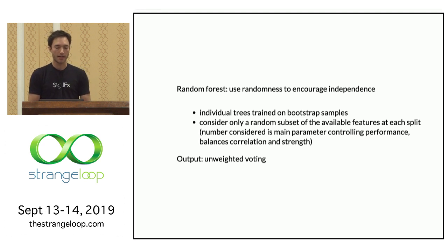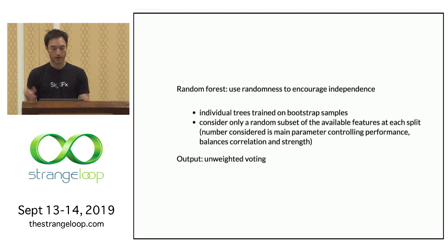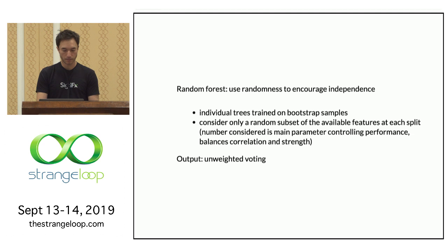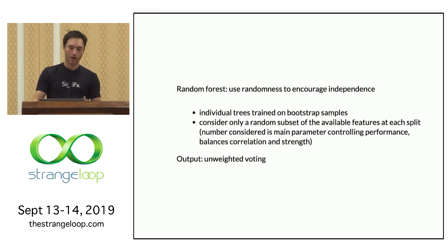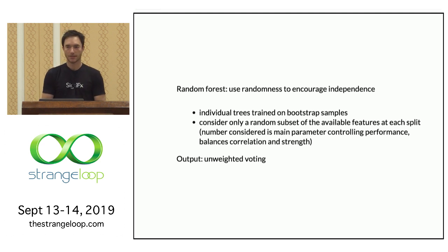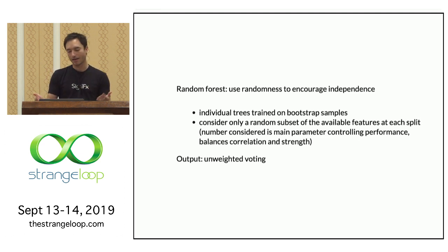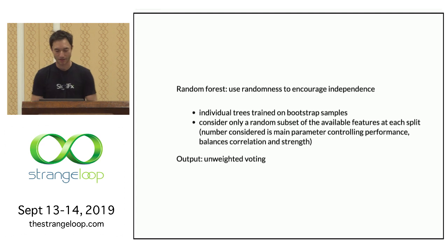The hope is that the trees will be independent because they're trained on different random subsets and consider at each node a different subset of available features. We take a bunch of bootstrap samples and random subsets of features, train trees on those, and then use unweighted voting to produce a prediction rule. If a phenomenon survives this process, then surely it's real.